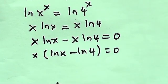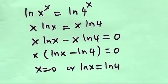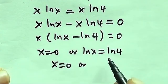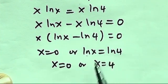You can see that this is a zero product equation. So this is going to be either x is equal to 0 or ln x equals to ln 4. So here we have x to be equal to 0 or we have x equals to 4 because this ln ln, so automatically we're going to be having x equals to 4.